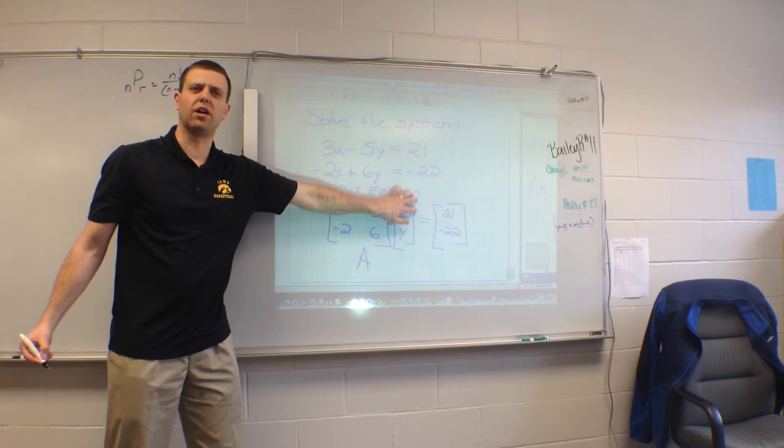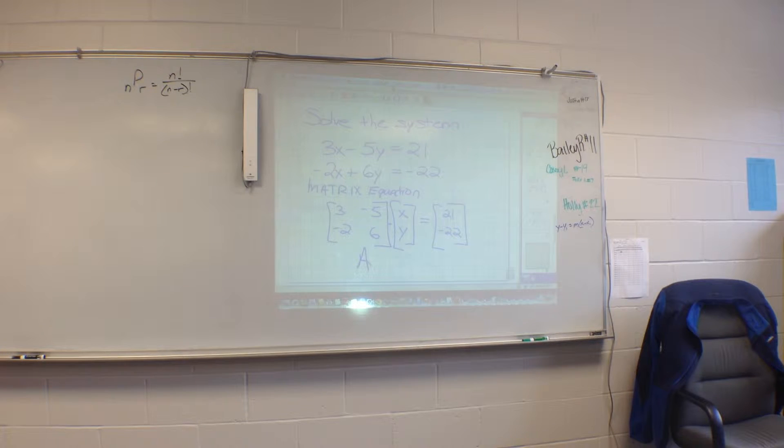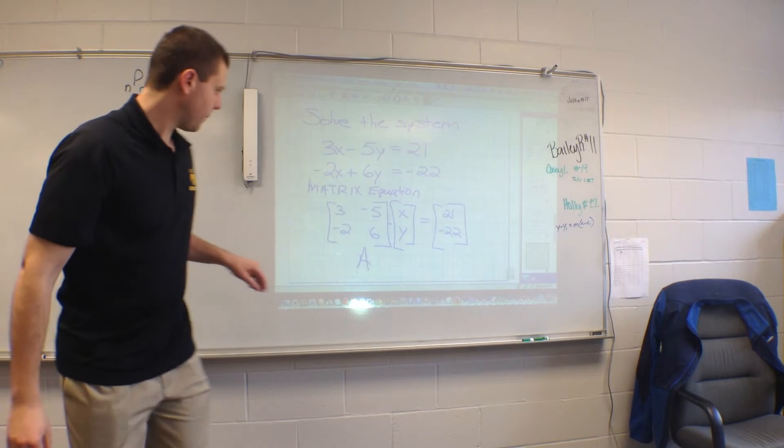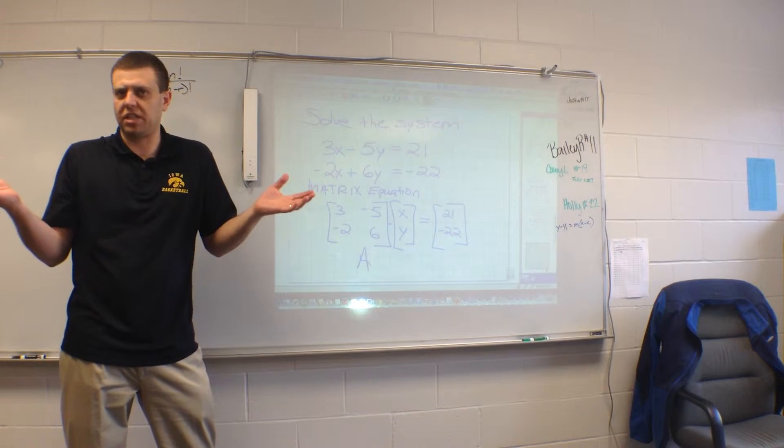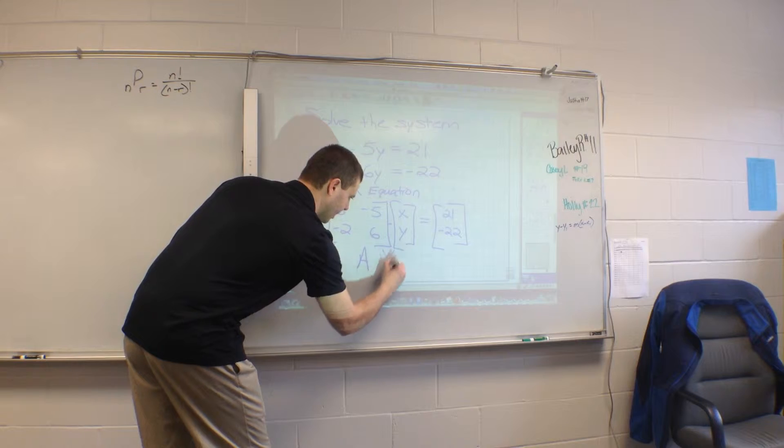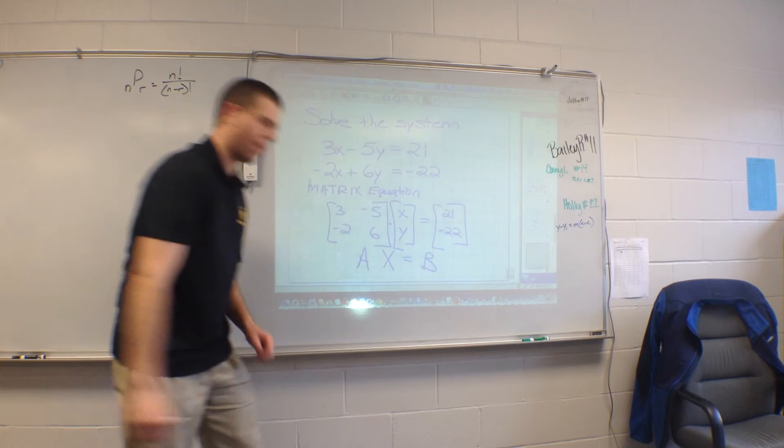I'm going to call this matrix right here, matrix A. I'm going to call the variable matrix here, matrix X. So I have A times X equals - I'm going to call this matrix right here, this matrix B.